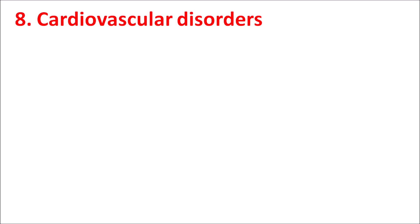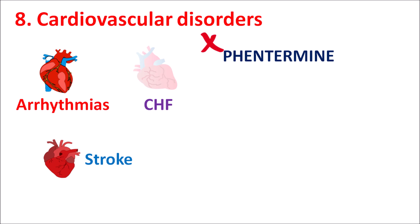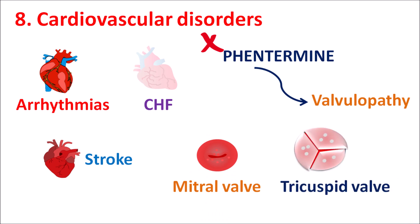The eighth contraindication is cardiovascular disorders. In patients with cardiac arrhythmias, congestive heart failure, or any recent history of stroke, phentermine is strictly contraindicated. This drug may produce valvulopathy — inflammation and damage to the mitral and tricuspid walls with long-term use, which is why phentermine is indicated only for short-term therapy. In patients with a history of cardiovascular complications, this drug may further impair cardiac functionality by damaging cardiac walls and increasing blood pressure.